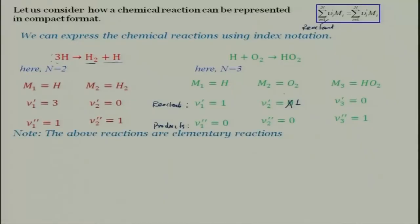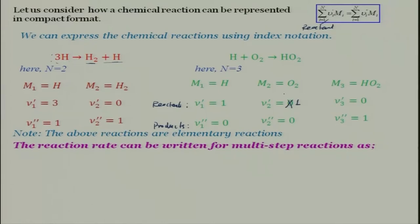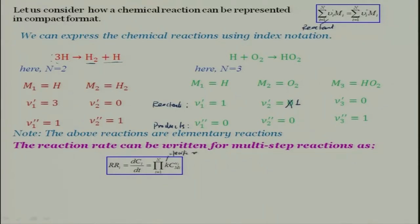The above reactions are elementary reactions. This notation is generally used for elementary reactions. When looking at kinetics we always try to use elementary reactions, but that does not mean we would not use global reactions. With the increase in computational power, people are going for better kinetics for simulation. The reaction rate of the i-th species is a summation over k, where k is your specific reaction rate, and C is the concentration of species M_i with stoichiometric coefficient nu_i.